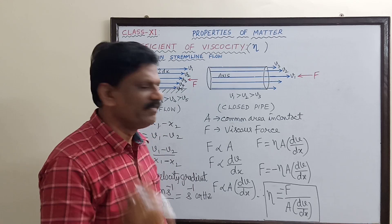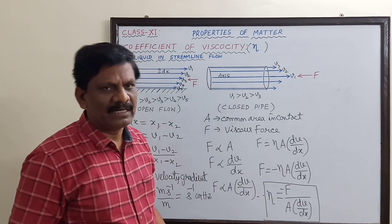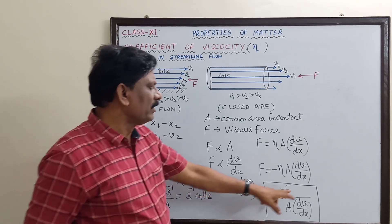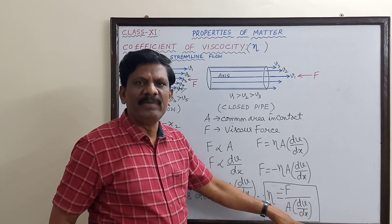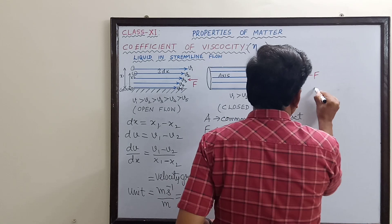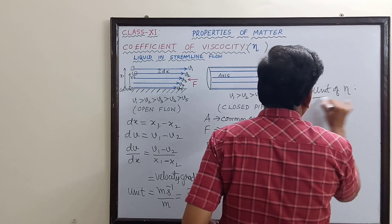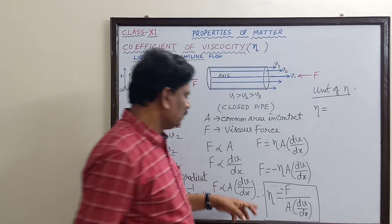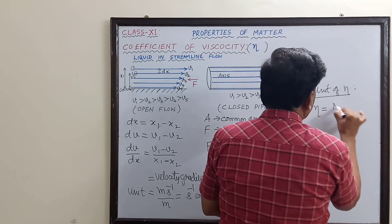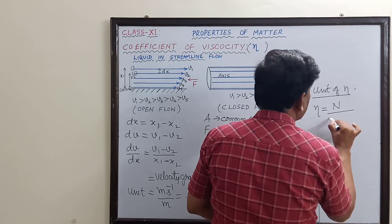So eta = F / (A · dv/dx). Now for the units of the coefficient of viscosity: eta equals force over area times velocity gradient. The unit of force is newton, area is meter squared,